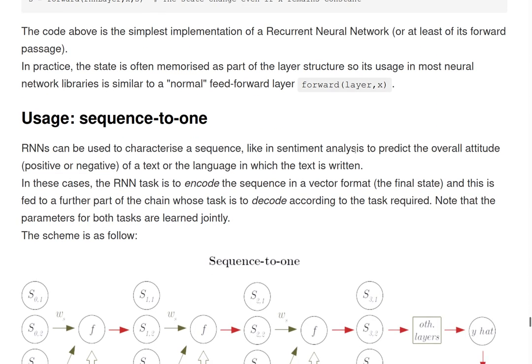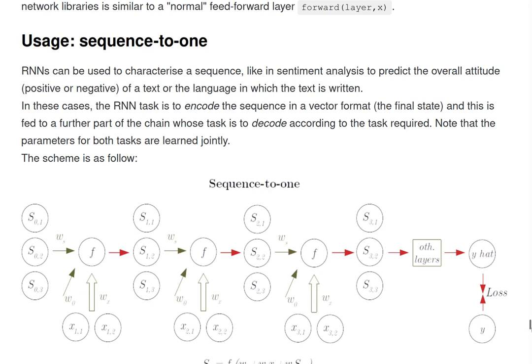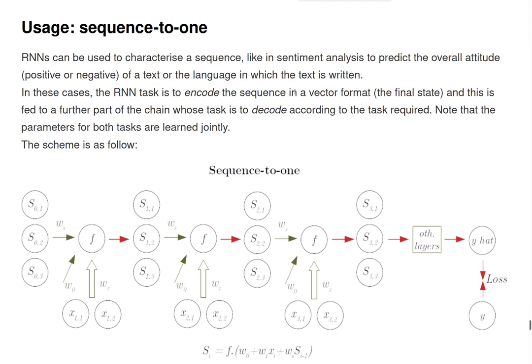RNNs can be used to perform different kinds of tasks with respect to sequences. For example, they can be used to characterize a sequence, to extract some information out of it, some property of this sequence. For example, in sentiment analysis we want to predict some text, so we have as input some text written in a natural language, and we want to analyze the meaning of that text in the sense if it is a positive or negative feedback for a product, for example.